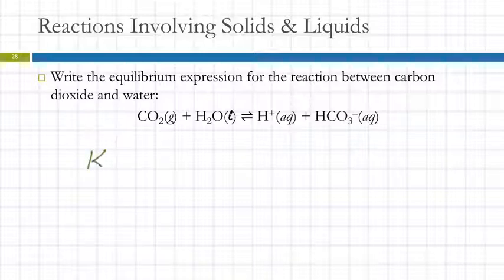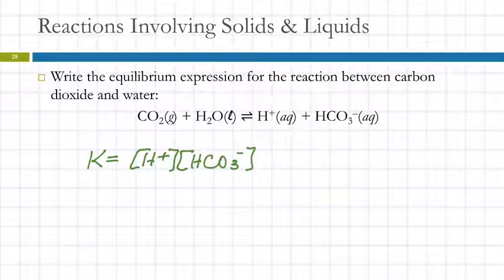So then for this one, the equilibrium concentration of the products, so we've got hydrogen ion and we've got hydrogen carbonate ion divided by the concentration of carbon dioxide. But we leave this guy out.